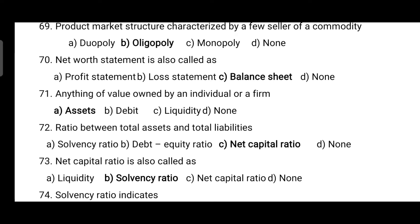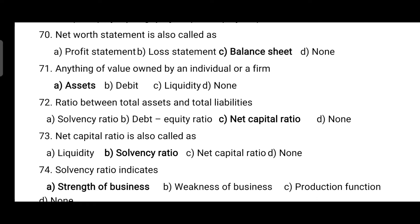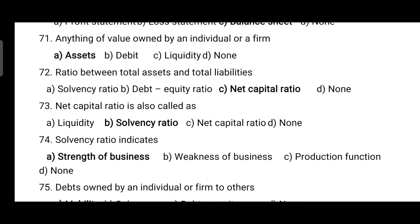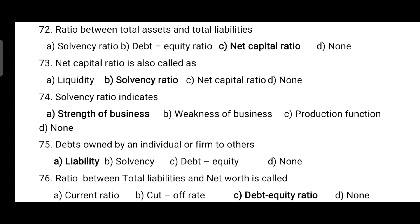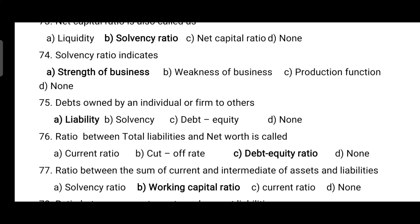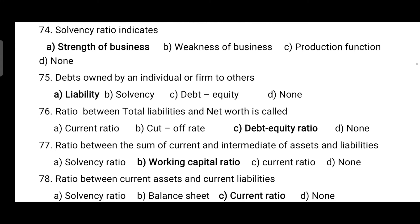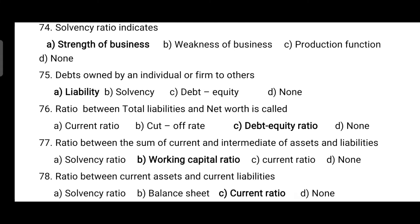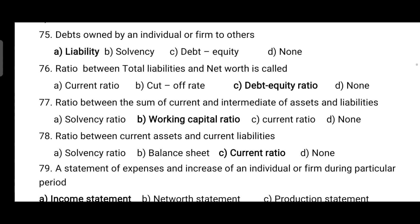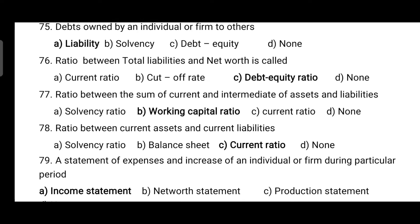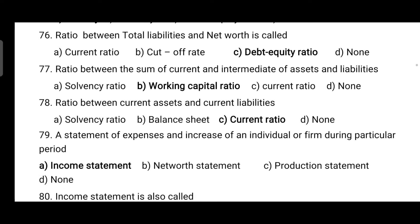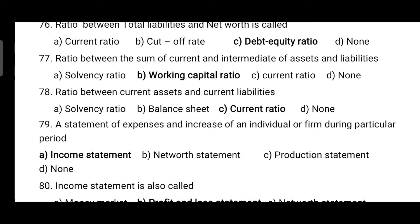A net worth statement is also known as a balance sheet. Anything of value owned by an individual or firm is called assets. The ratio between total assets and total liabilities is the net capital ratio, also called solvency ratio, which indicates the strength of a business. Debts owed by an individual or firm to others are known as liability. The ratio between total liability and net worth is the debt equity ratio. The ratio between the sum of current and intermediate assets and liabilities is the working capital ratio.